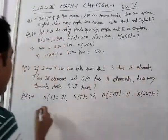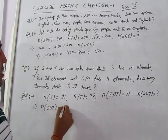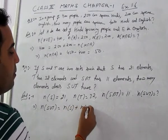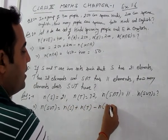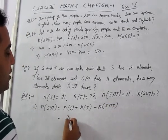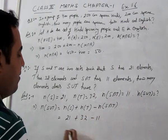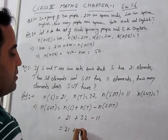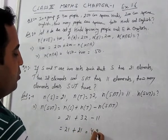Using the formula: n(S∪T) = n(S) + n(T) - n(S∩T). Putting all the values: 21 + 32 - 11 = 42. Answer: 42.